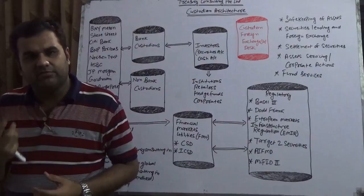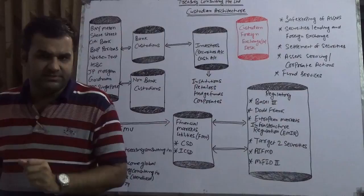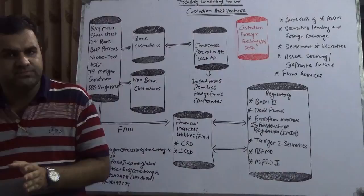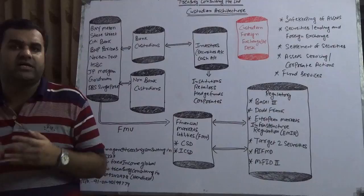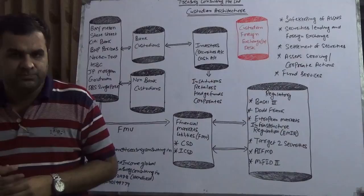Custodian clients are mutual funds, hedge funds, endowment funds, alternative investment funds, big corporates, sub-custodians, CSD (central security depositories), ICSD (international central security depositories), and others. I hope you heard about the largest reinsurer, Prudential. I hope you heard about alternative investment funds and endowments.